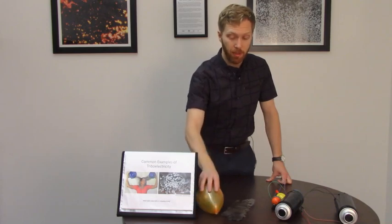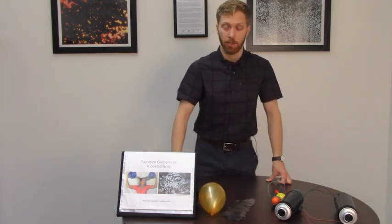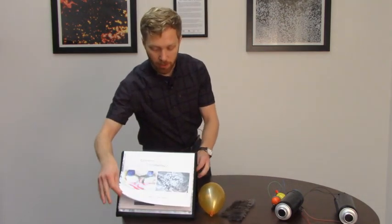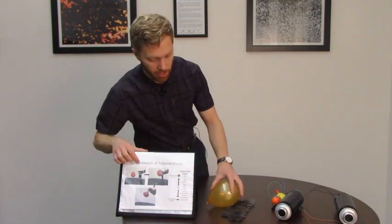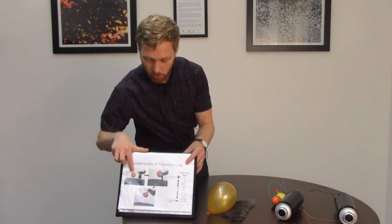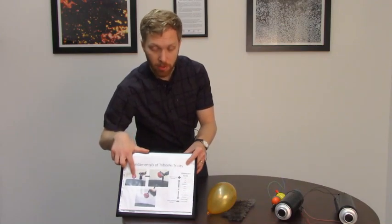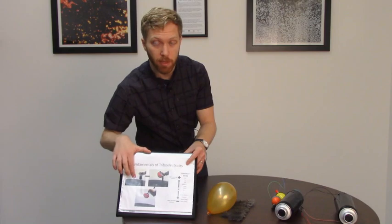So another name for static electricity is triboelectricity. And what's happening in this static electricity or triboelectricity is that we have two different materials and they start out with the same number of positive and negative charges. So they have a net zero charge.